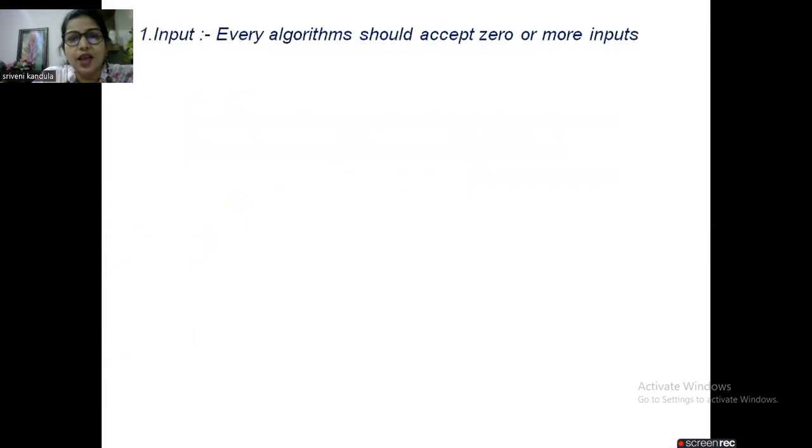Input is every algorithm should accept zero or more inputs. Can you just recollect the cases where an algorithm need not accept any input? It is the case of a program or an algorithm where you initialize a variable with a value. There you need not read any value from the keyboard. So it needs zero inputs. Suppose if the case is to read some variables, you might be accepting one or more variables.